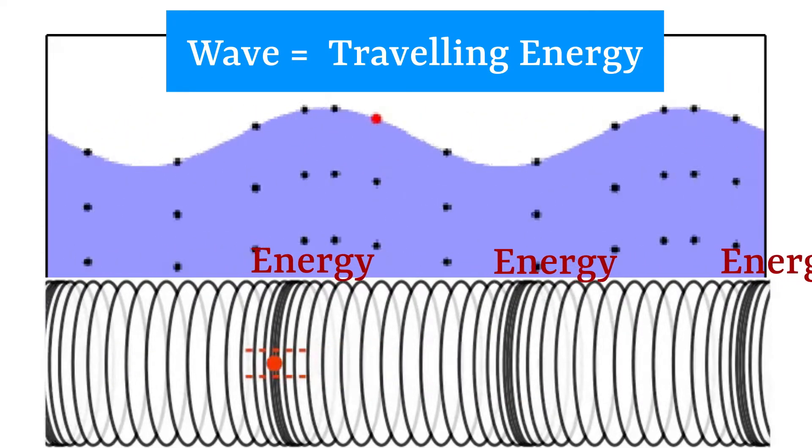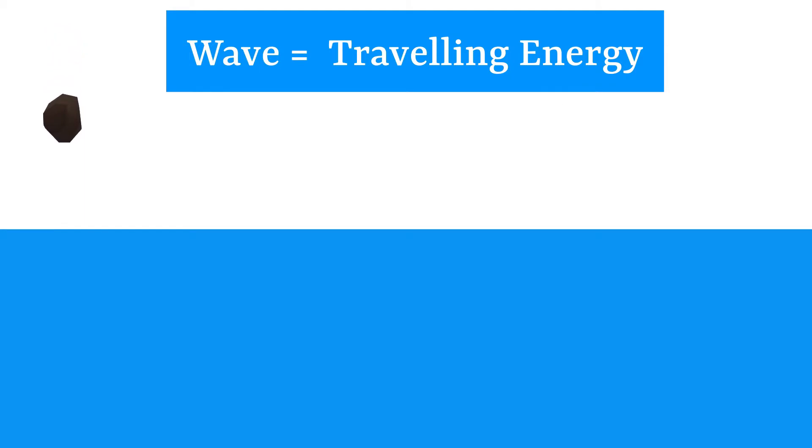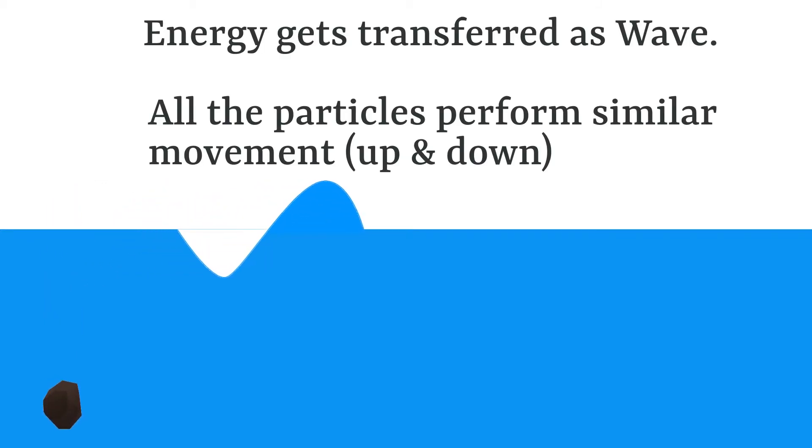You can think of the wave as the traveling form of energy. When you throw a stone in a pond, you impart some energy to the water particles. This energy gets transferred to other particles in the form of a wave, and as the energy reaches far away particles, they perform a similar motion as the nearby particles.